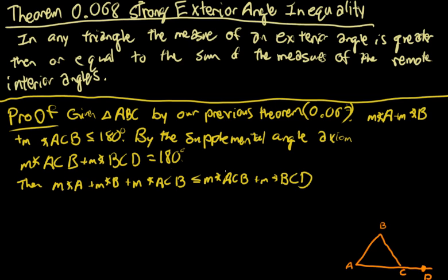Notice these have a term in common, measure of angle ACB. We can cancel that out, so measure of angle A plus measure of angle B is less than or equal to measure of angle BCD, which is our exterior angle.